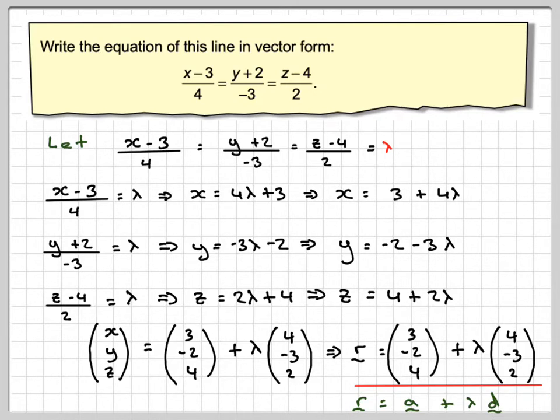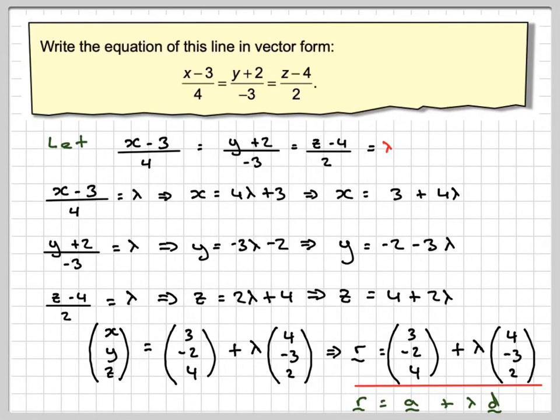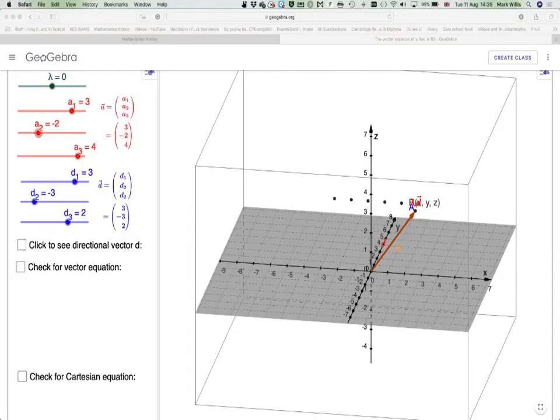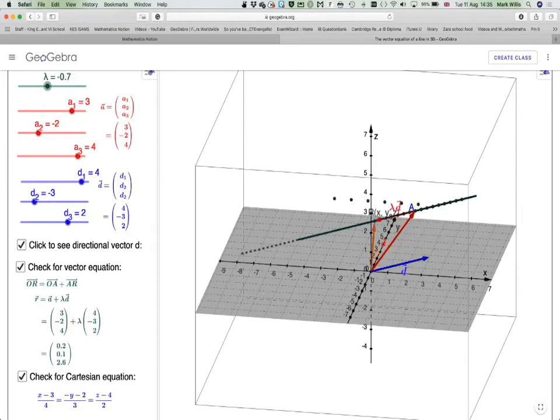Let's just have a look at that on this GeoGebra app. I hope I put all the components in right. That should be... this one should be a 4. Let's just change that to be a 4. OK, there's the directional vector. And if we move the slider here at the top, we'll get the line. This is the line here.